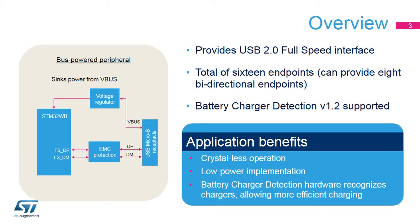The simplest implementation is a USB peripheral device. It provides a 16-endpoint capability, which can be configured, for example, as 8 bidirectional endpoints. It also supports the Battery Charging Detection Specification, version 1.2.